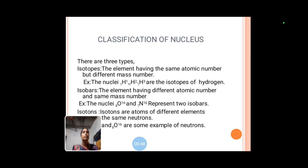Classification of nuclei. There are three types: Isotopes, isobars, and isotones. Isotopes are elements having the same atomic number but different mass number. Isobars are elements having different atomic number and same mass number. For example, oxygen and nitrogen represent two isobars.